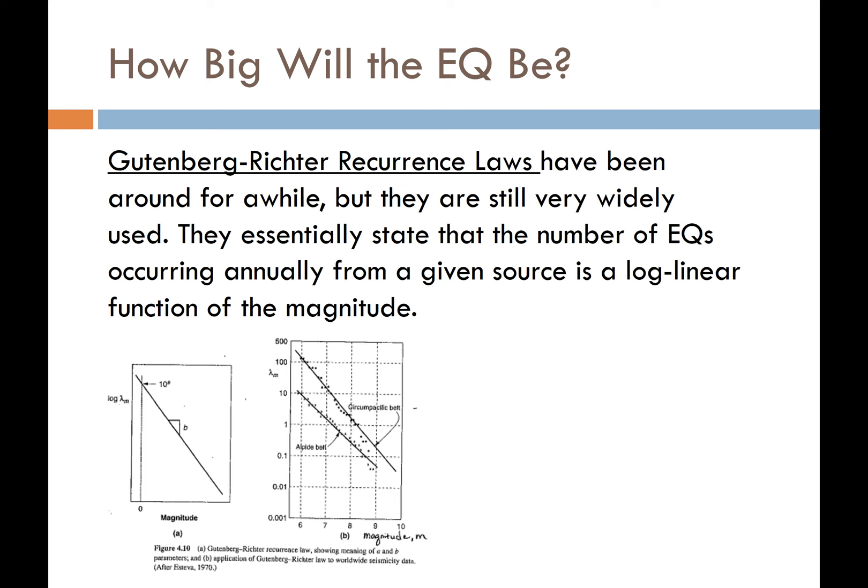More common is the Gutenberg-Richter recurrence law. These have been around since the 1930s and are still very widely used. It's one of the most amazing seismic-related discoveries, and a key reason Gutenberg and Richter remain such big names in earthquake engineering. These relationships state that the number of earthquakes occurring annually from a given source is a log-linear function of magnitude.